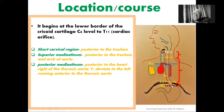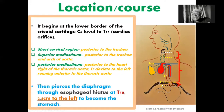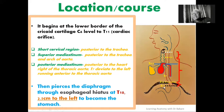The oesophagus pierces the diaphragm at the T10 thoracic level and enters the abdominal space. At T11, it expands to become the stomach. You can see the established path of the oesophagus from the cervical region down through the thoracic region and into the abdominal region.